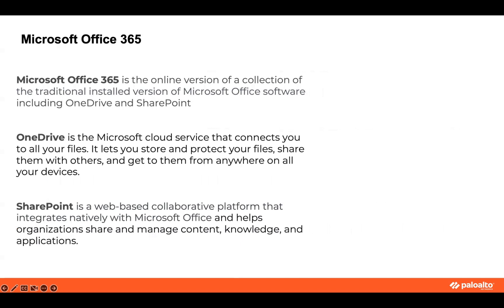Microsoft Office 365 is the online version of traditional Microsoft Office software. It is a collection of applications, including OneDrive and SharePoint. OneDrive is a Microsoft cloud storage service — you can store and protect your files and access and share them securely. SharePoint is Microsoft's web-based collaboration platform that helps organizations with sharing and managing content and knowledge.